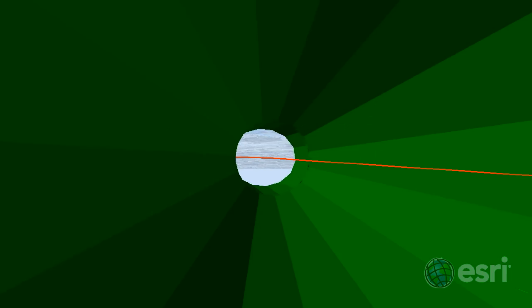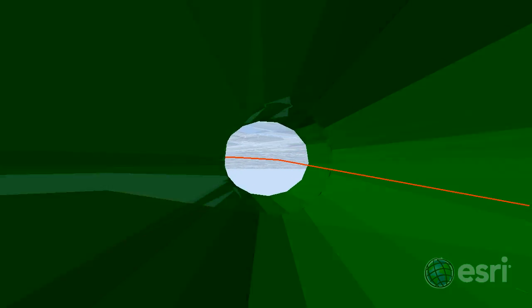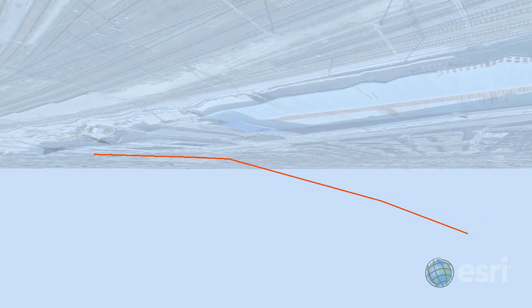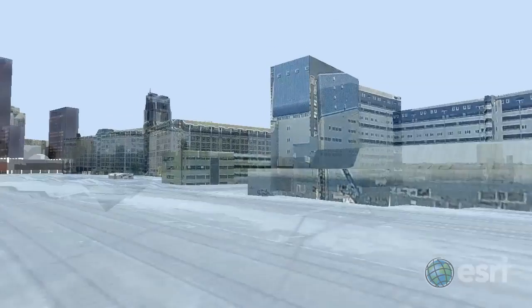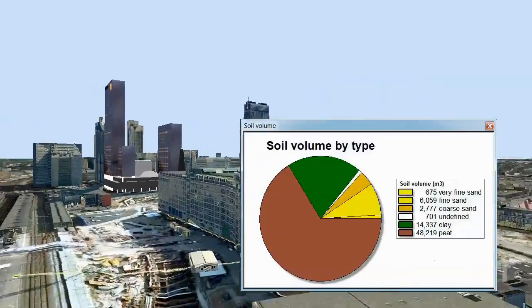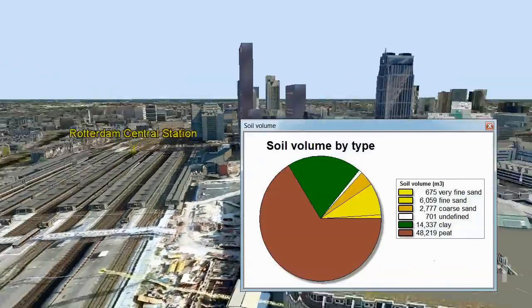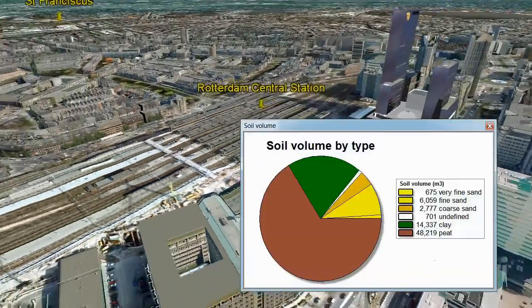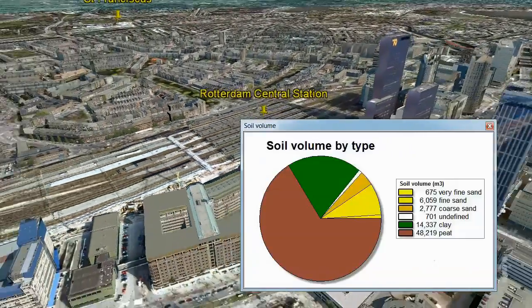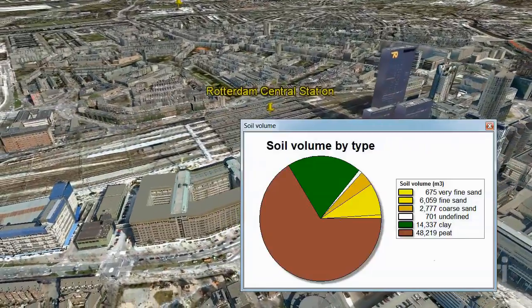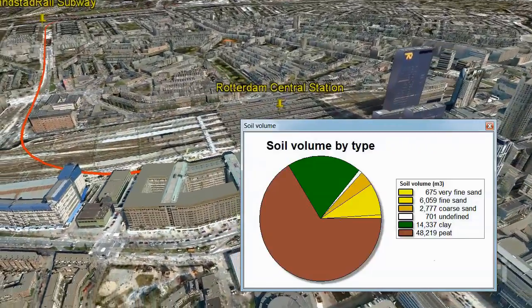The end result we're after is to summarize by soil type to get a good indication of how much of each soil type needs to be removed. As you can see in the graph, peat is the largest volume, followed by clay and then sand.